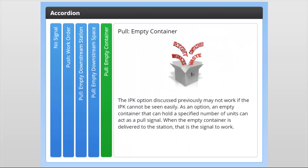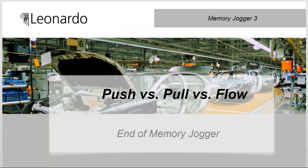The IPK option discussed previously may not work if the IPK cannot be seen easily. As an option, an empty container that can hold a specified number of units can act as a pull signal. When the empty container is delivered to the station, that is the signal to work. This concludes this memory jogger on the topic of push vs. pull vs. flow.